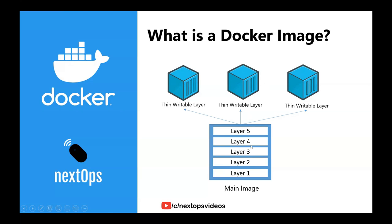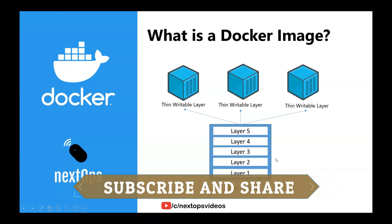When you restart the container, the data in the writable layer is not guaranteed to persist. For persistent storage for containers, you use Docker volumes — that is the volumes concept. When we create a new file in a container, it is added in this writable layer on top of the already existing read-only image layers. That is the writable layer concept and the overall image concept. That is all for this video, guys. Thank you so much for watching and see you in the next video.